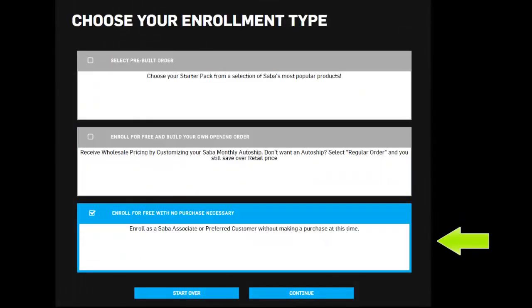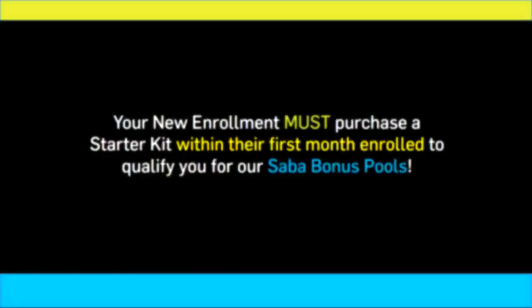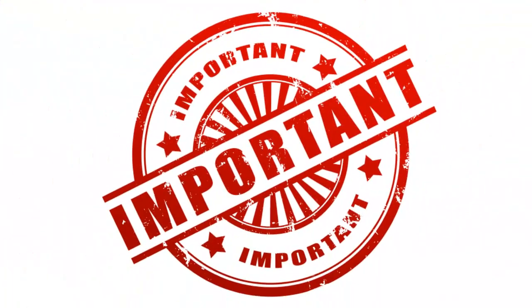Option three: Enroll for Free with no purchase necessary. Selecting this option will register your new enrollment as a preferred customer or associate without requiring them to purchase a starter kit. Your customer will receive their login information so that they can place their order at their convenience. When your customers select this option, their enrollment will not count towards our Saba bonus pools. Your customer must purchase a starter kit in order for their enrollment to count towards the bonus pools.